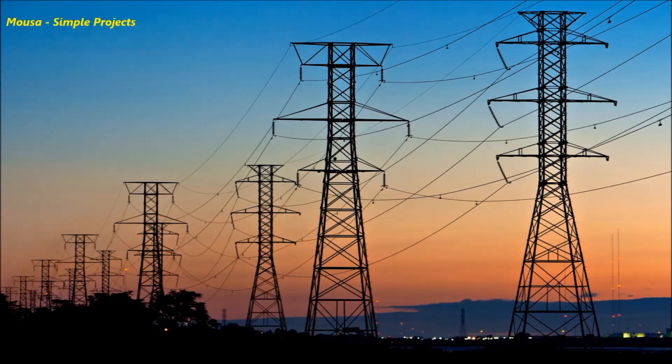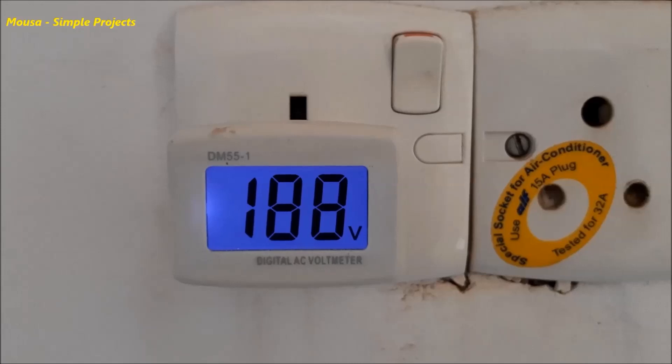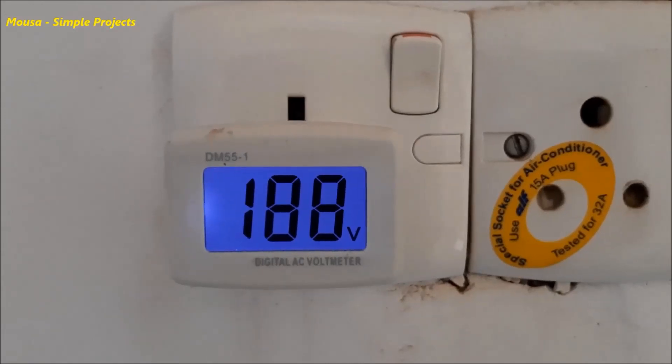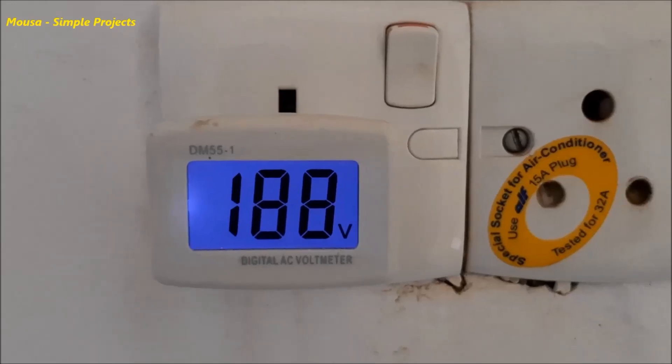In some countries in the world the voltage that coming from the electric grid are not stable. For example, in my country the mains voltage supposed to be 220 volts but it sometimes drops to 188 volts as you can see here.